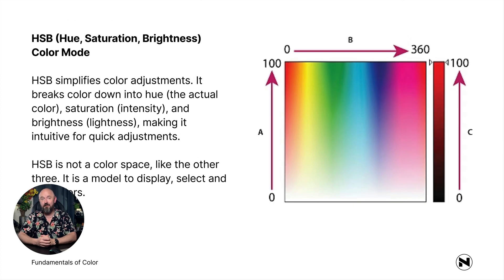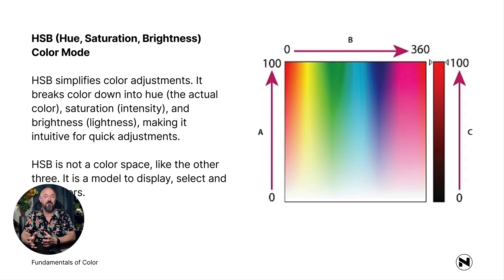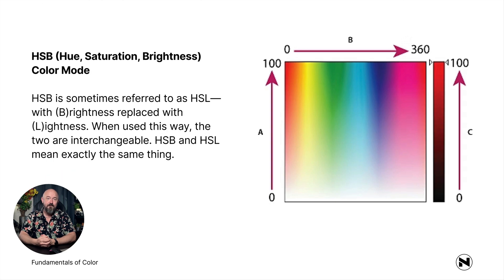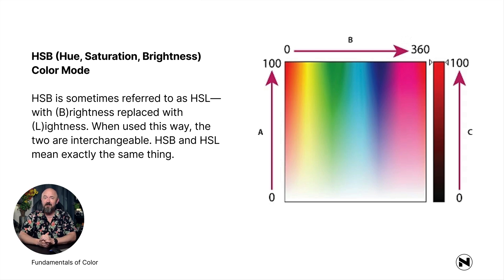Finally, we have HSB — hue, saturation, and brightness. HSB simplifies color adjustments by breaking color down into hue (the actual color), saturation (how much of the color), and brightness (the lightness and darkness of your image), making it intuitive for quick adjustments. HSB is not a color space like the other three — it's a model to display, select, and edit colors. HSB is sometimes referred to as HSL, with brightness replaced by lightness, and when used this way the two are interchangeable.